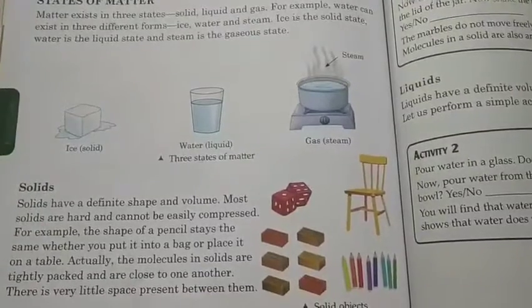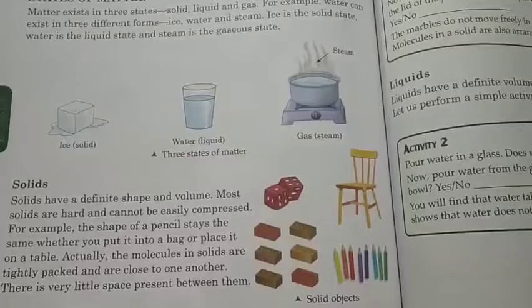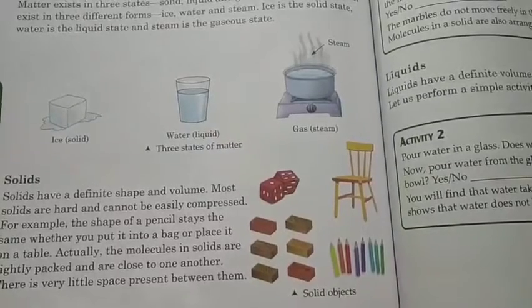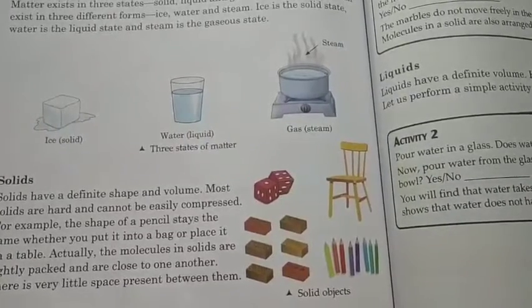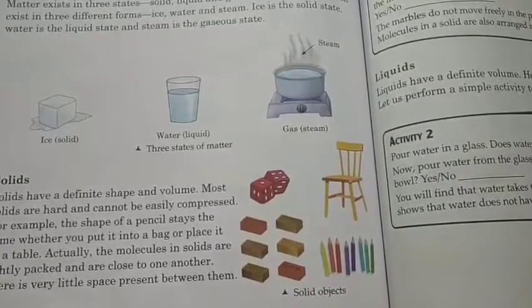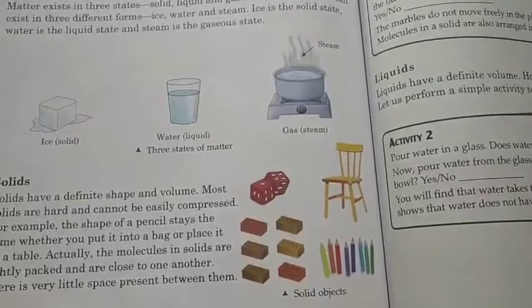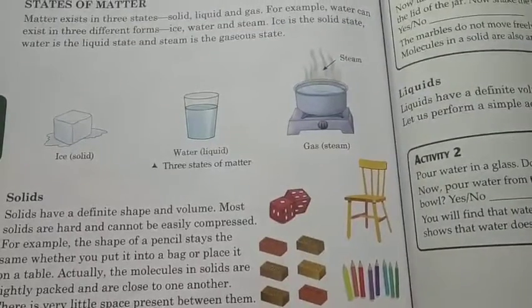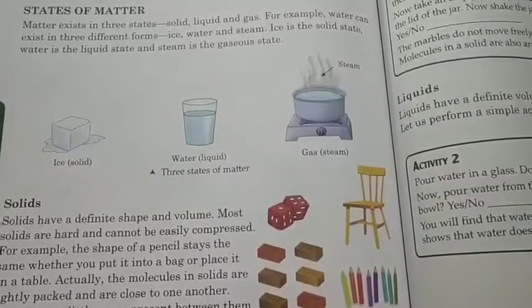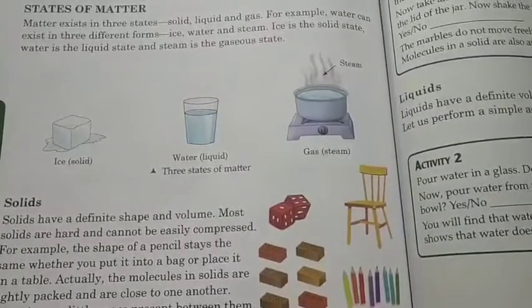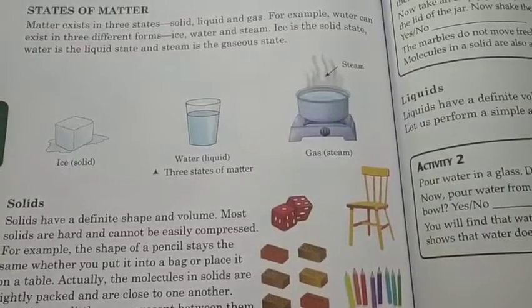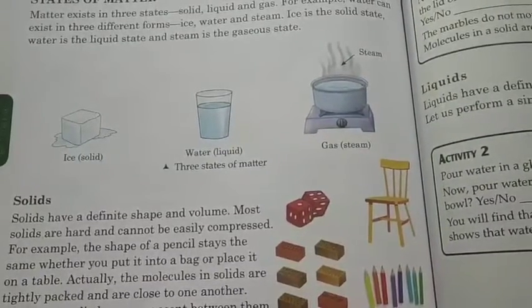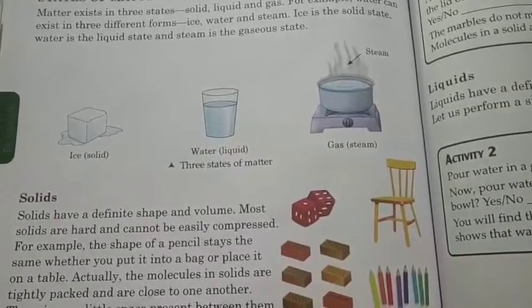Solids. Solids have a defined shape and volume. Most solids are hard and cannot be easily compressed. For example, the shape of a pencil stays the same wherever you put it. Actually, the molecules in a solid are tightly packed and are close to one another. There is very little space present in them. कई जो solids होते हैं वो बहुत मजबूत होते हैं, जिन्हें हम easily compress नहीं कर सकते क्योंकि वो एक ही form में रहते हैं.